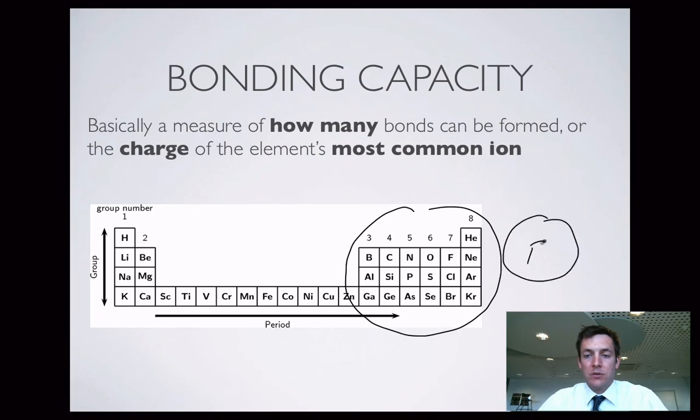So fluorine, for example, with its 7 outer shell electrons, has got space for 1 more. That means it can form 1 covalent bond. Oxygen, sulfur, selenium, they've got 6 electrons in their outer shell, so they can accept another 2, which means they can share electrons and form 2 covalent bonds. So their covalent bonding capacity is 1, 2, 3.